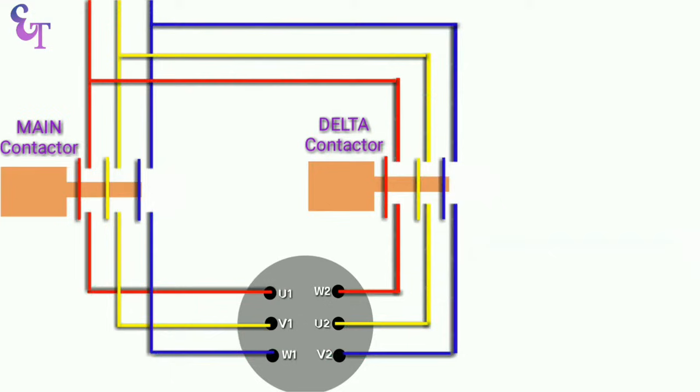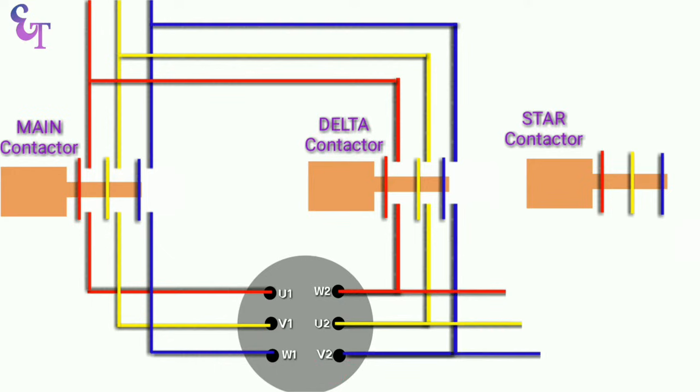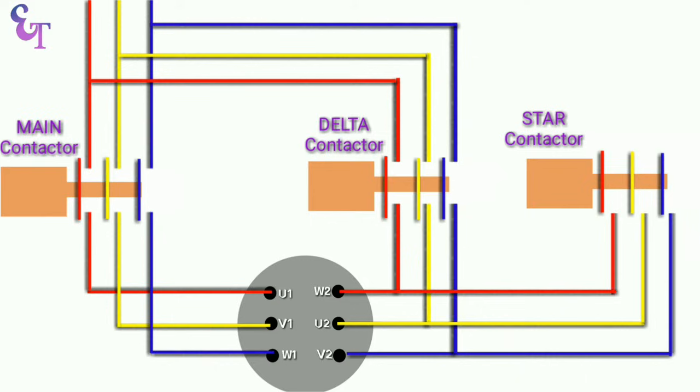Now to connect motor winding in star we will use one more contactor. We call this contactor as star contactor. For the connection of star contactor we just need to connect three wires with the output terminal of delta contactor and connect these three wires with star contactor as shown in the diagram. Upper side terminals of star contactor here we short these terminals with each other. So star connection here is completed.